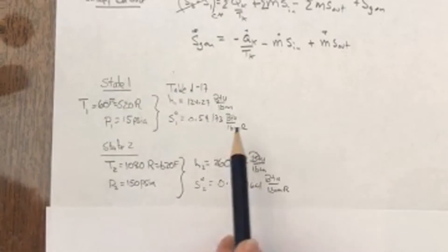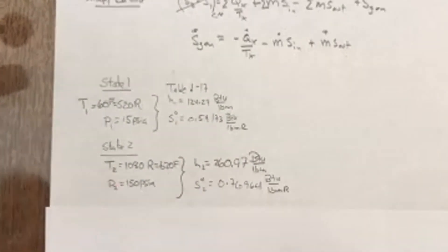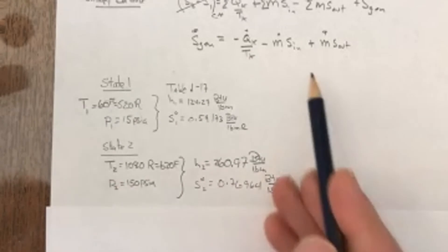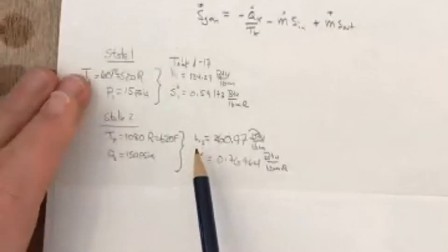So I'm going to work with the variable-specific heat formulation when I calculate S. State 2 is also pretty straightforward. I know the temperature, so I can just read it right off the table A17.